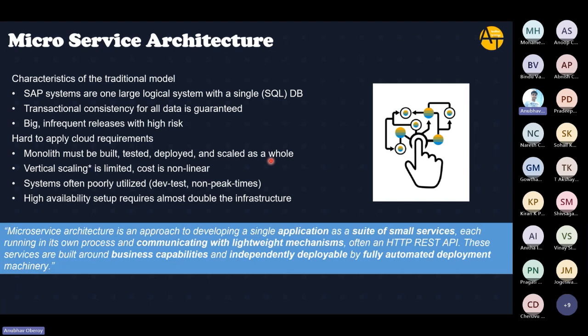In a monolithic architecture, you build the entire system as a whole, test it as a whole, deploy it as a whole, and scale it as a whole. So if you want to increase memory for one transaction, that's not possible. You have to attach memory to the entire system. That's the problem of monolithic architecture.